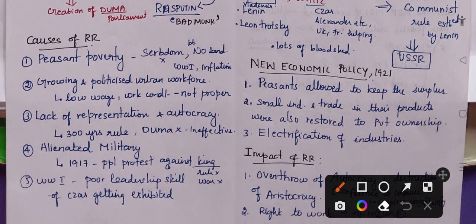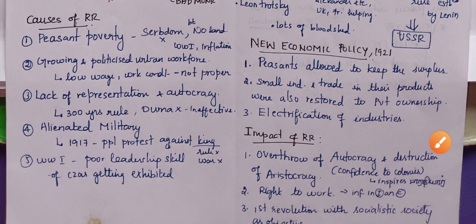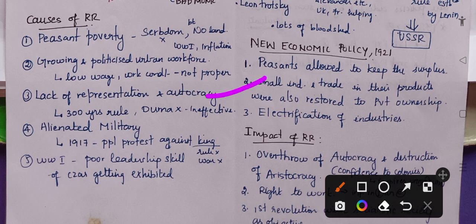Now, what are the causes of the Russian Revolution? First is peace and poverty. Though serfdom was abolished, land was not given to the people. After World War I, inflation of goods also increased. Then there was a growing and politicized urban workforce with low wages and poor working conditions. There was also lack of representation and autocracy for 300 years, but the Duma was ineffective. In 1917, the military was alienated and people protested against the king. World War I also showed the poor leadership skills of the Tsar.